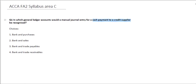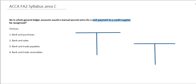If we're looking at transactions relating to credit suppliers, we're looking at amounts owed to suppliers from purchasing goods for the business. Any transactions relating to credit suppliers will go through the Trade Payables account. If you're recording a purchase invoice relating to a credit supplier, you're going to debit Purchases and then your invoice would go on the credit side of Trade Payables.